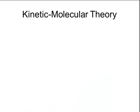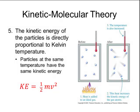The last basic tenet of the kinetic molecular theory is that the kinetic energy of the particles is directly proportional to their Kelvin temperature. Kelvin temperature is just a different temperature scale than the Fahrenheit or Celsius scale. In other words, particles that are at the same temperature will have the same amount of kinetic energy. The equation used to calculate kinetic energy is one-half mv squared, where kinetic energy is directly proportional to the mass and velocity of the particles.